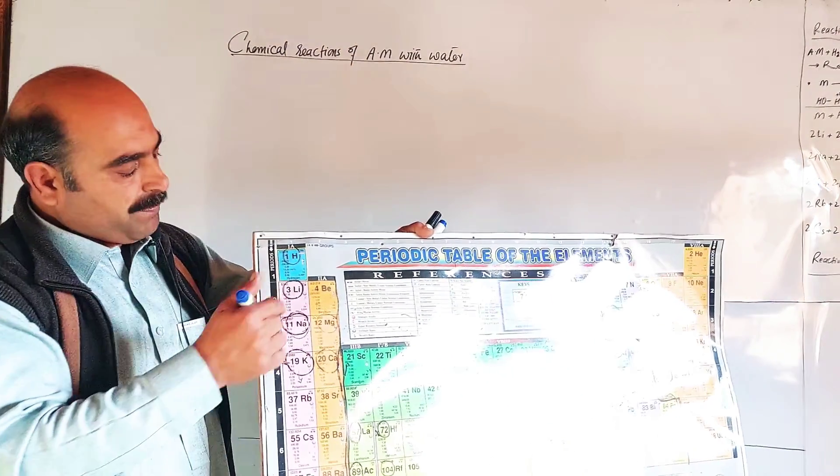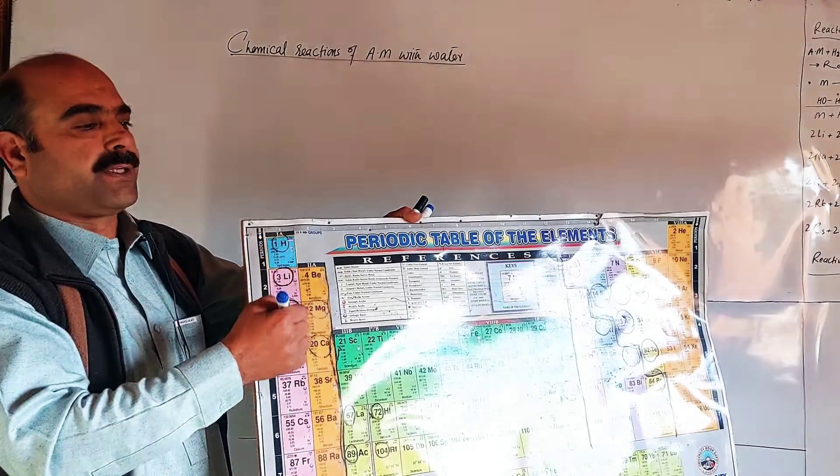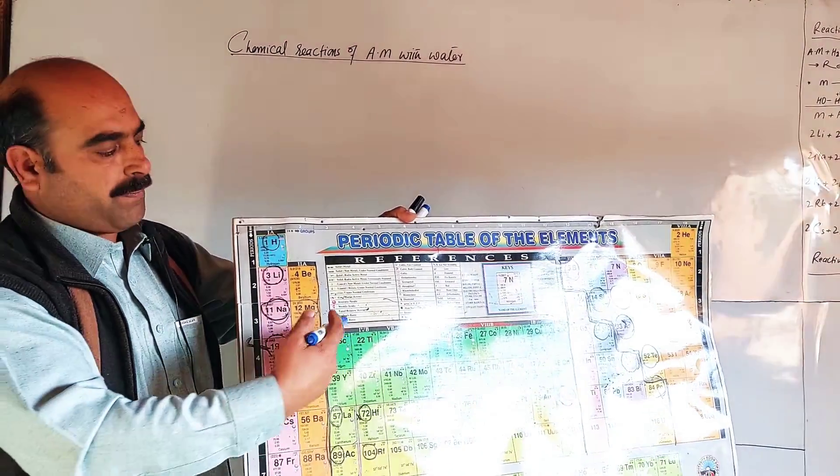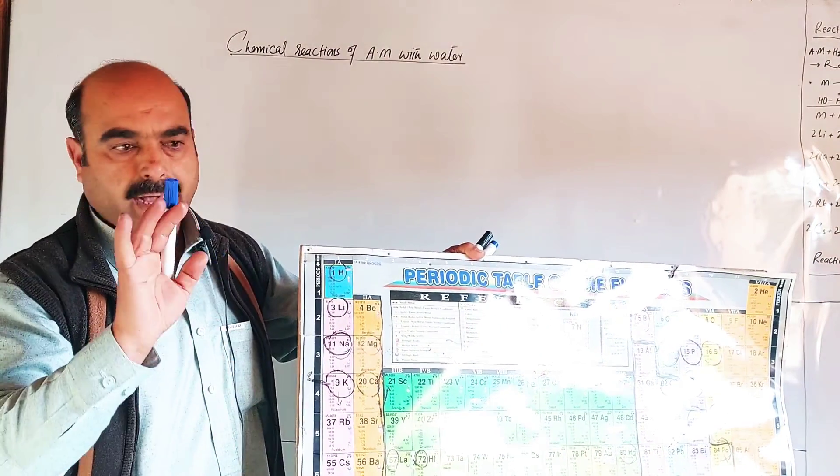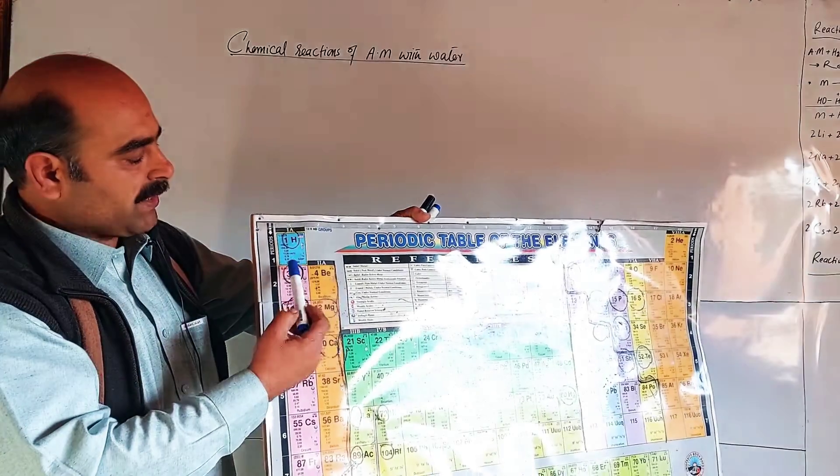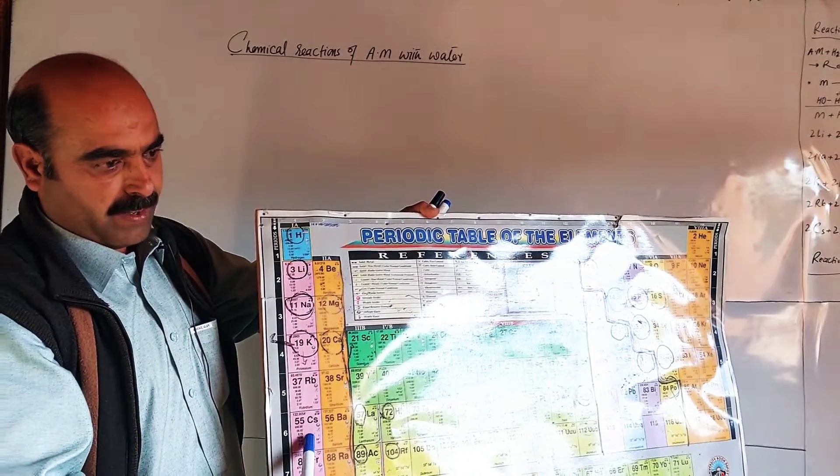They have larger sizes compared to other elements of their respective periods. Every period starts with alkali metals.